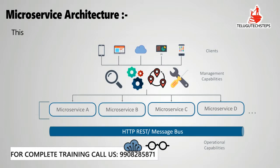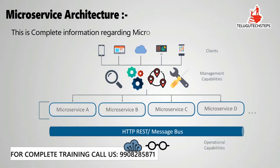By using microservices, a complicated application is split into separate domains and functionalities. Each domain's code is separated and can be scaled independently, which increases the application's processing speed, response time, and overall performance.